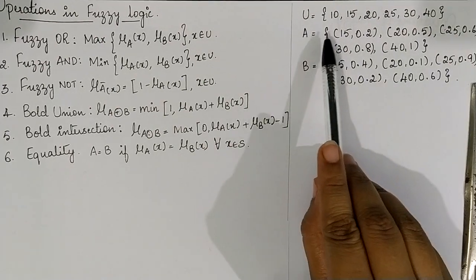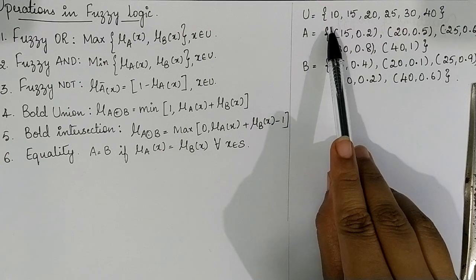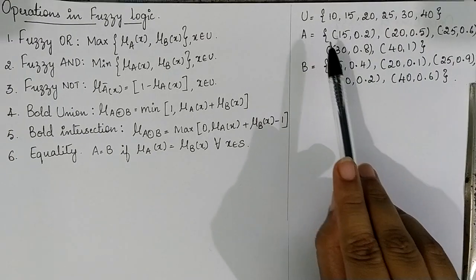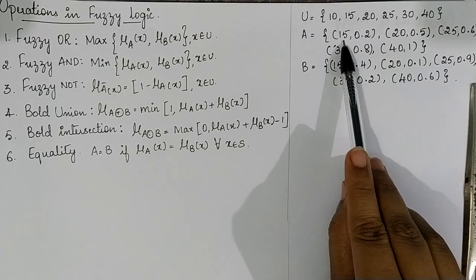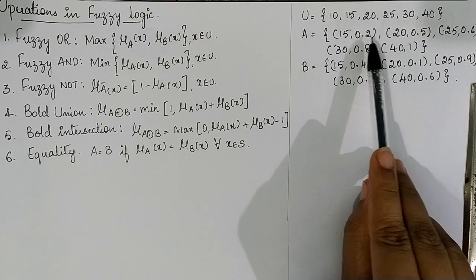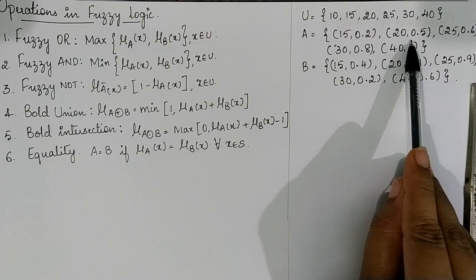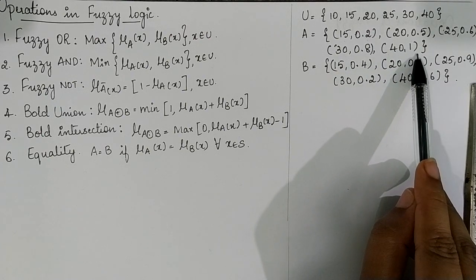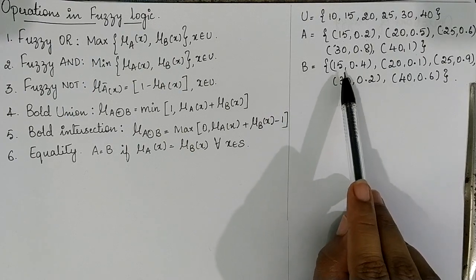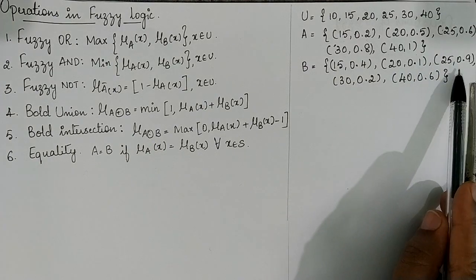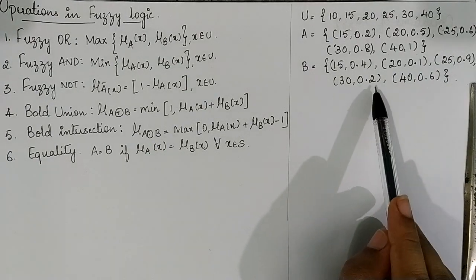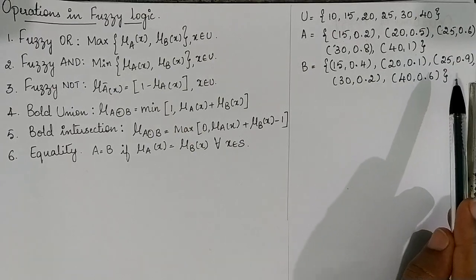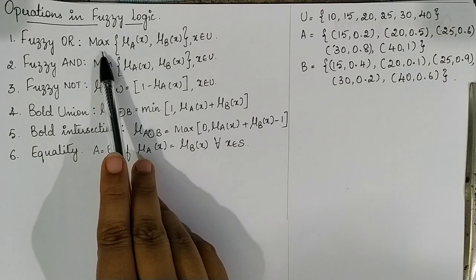Let's see how to perform this operation by considering the universal set which contains the values 10, 15, 20, 25, 30, and 40. Set A contains the fuzzy set values: 15→0.2, 20→0.5, 25→0.6, 30→0.8, and 40→1. Set B contains the values: 15→0.4, 20→0.1, 25→0.9, 30→0.2, and 40→0.6.